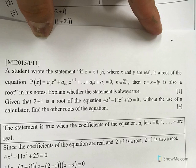A student wrote that if z equals x plus i y, where x and y are real, is a root of the equation, then the conjugate of z equals x minus i y is also a root. So explain whether the statement is always true.